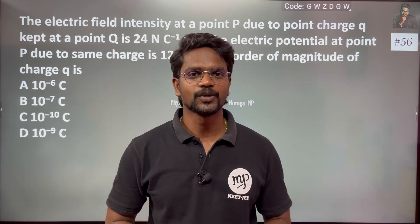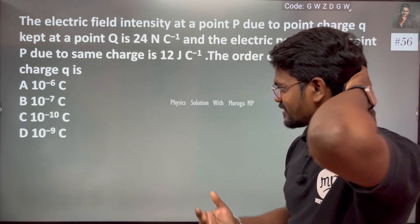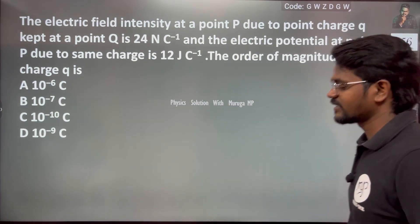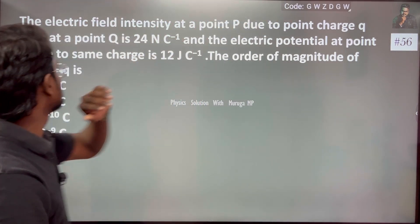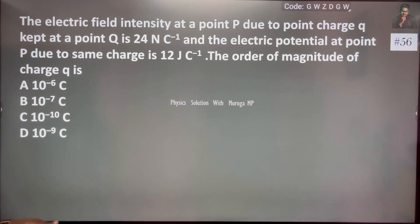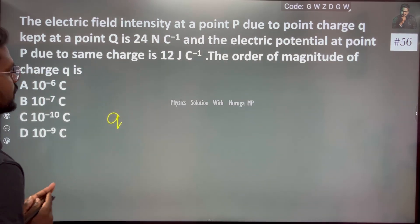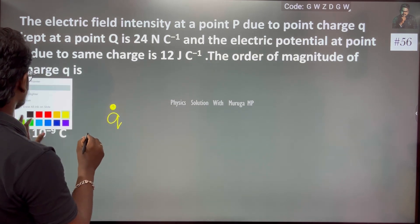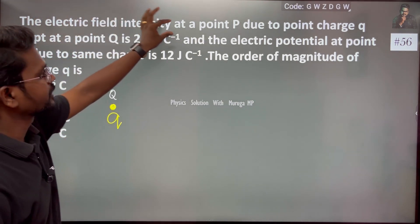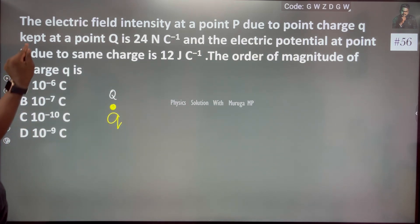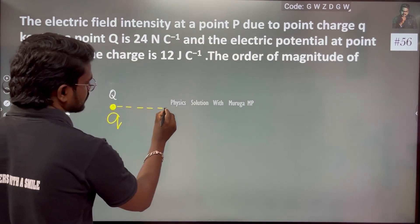Hi everyone. Question number 56: the electric field intensity at a point P. The electric field intensity due to a point charge Q is kept at a distance R. So Q is one charge placed at a position — the electric field at a point P due to the point charge Q kept at a point, with charge Q placed there. This is the distance we know.